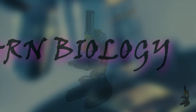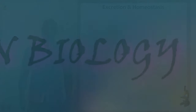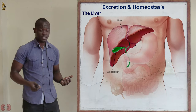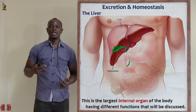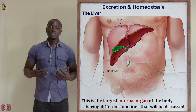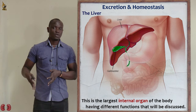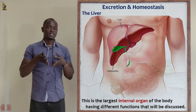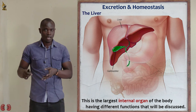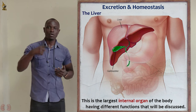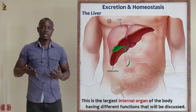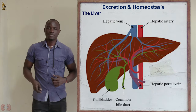Biology. Let's now look at the liver. The liver is the largest internal organ in the body. The skin is the largest external organ, while the liver is the largest internal organ. But if you look at the organs as a whole, the skin is the largest organ in the body.